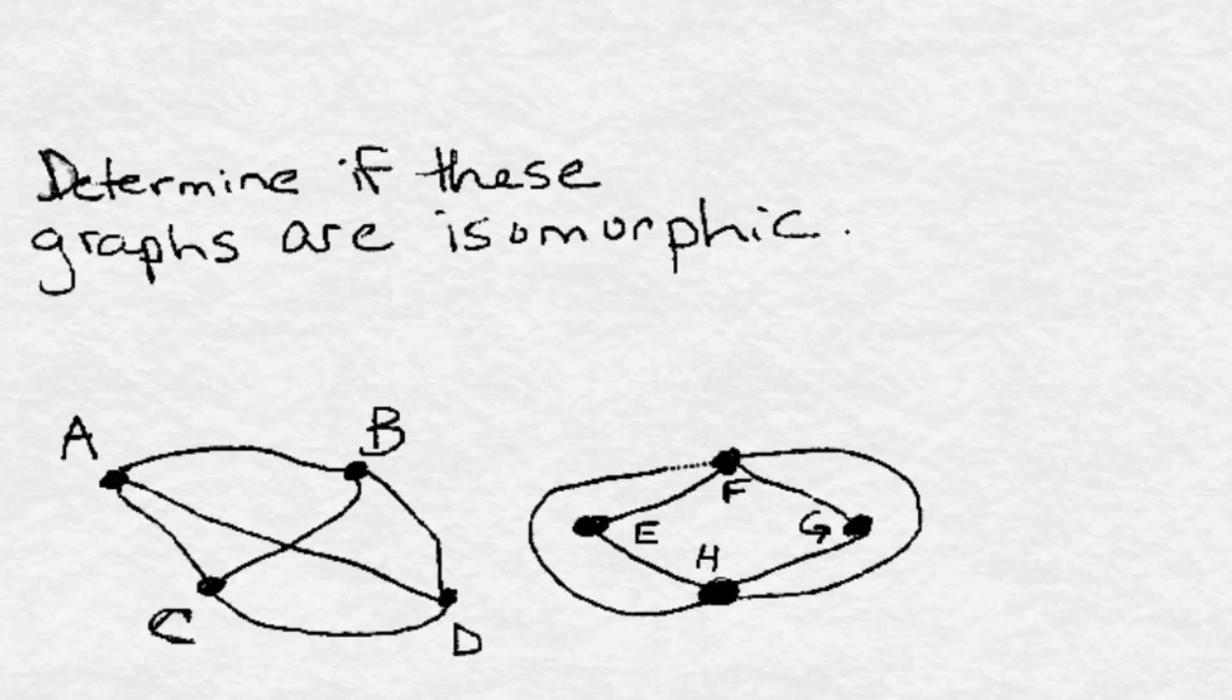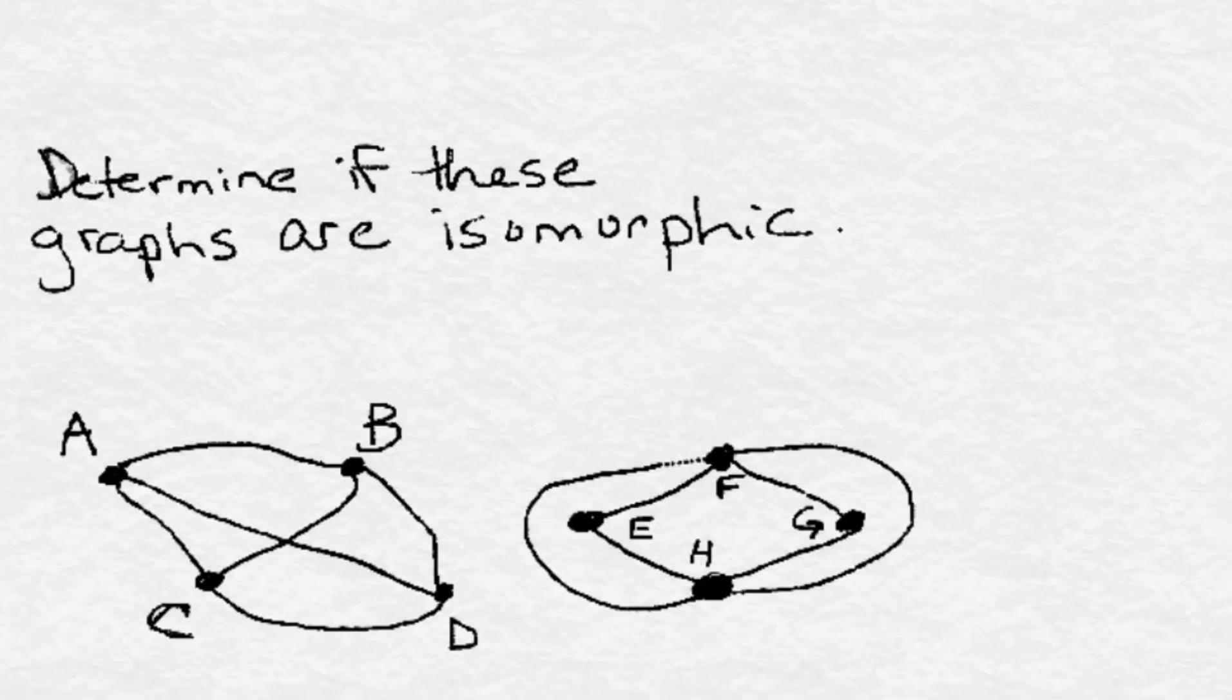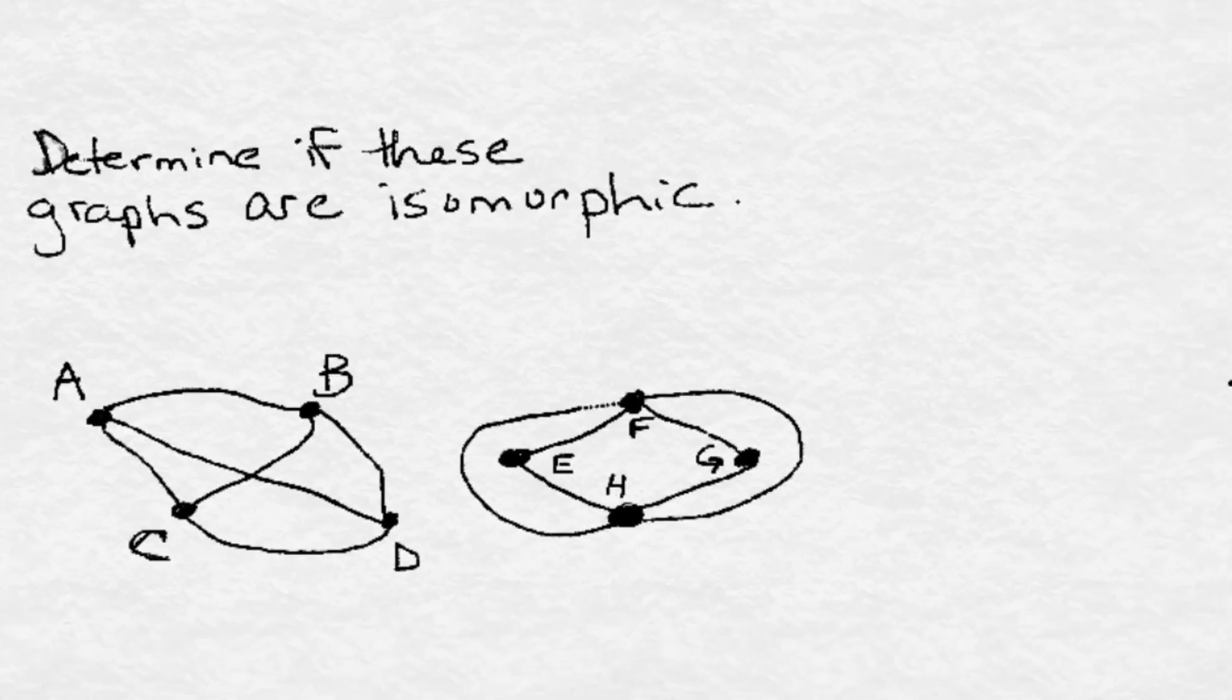Now, it's much easier to show that two graphs are not isomorphic often than it is to show that they are. So what you want to do when you're asked to determine if two graphs are isomorphic is see if you can quickly eliminate the possibility of an isomorphism by looking at two things.